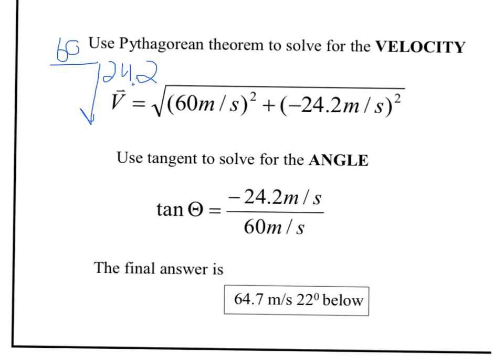In order to find the angle at which it hits, it'll be this angle here. You could use sine, cosine, or tangent at this point. If you use tangent, just do the opposite, 24.2 divided by the adjacent which is 60 to find your angle. Make sure you do it in degrees on your calculator.